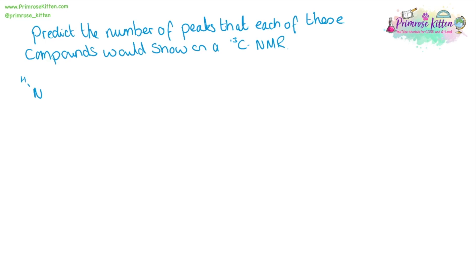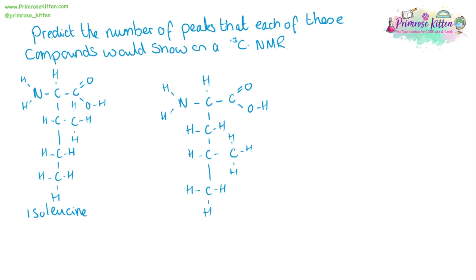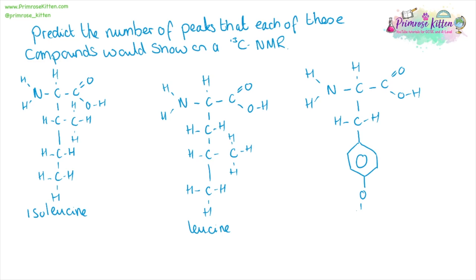Predict the number of peaks that each of these compounds would show on a carbon NMR. We have three amino acids here: isoleucine, leucine, and tyrosine. From these, we're gonna look at all of the different carbon environments.